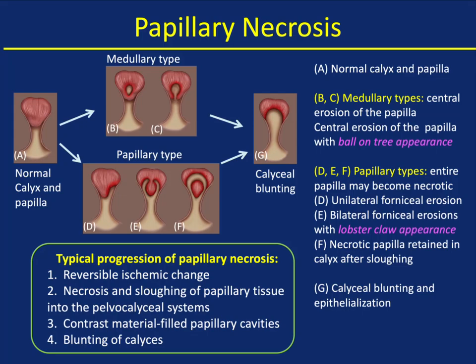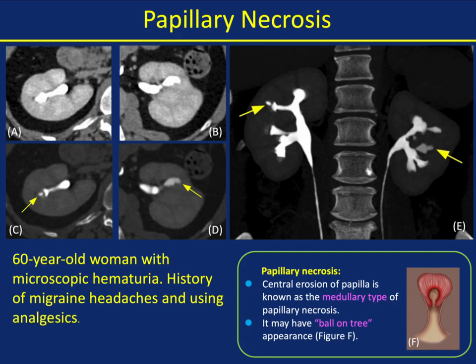There's an excellent article by Satomi Kawamoto I recommend you read, talking about papillary necrosis. You're seeing the normal calyces, then the medullary type of papillary necrosis, the papillary type, and eventually calyceal blunting. The medullary type — central erosion of the papilla with a ball-on-tee appearance. The papillary type: the entire papilla may become necrotic, with bilateral fornyceal erosions giving a lobster claw appearance. Necrotic papillae are retained in the calyx after sloughing, looking like blood clot. The typical progression is reversible ischemic change, necrosis and sloughing into the pelvicalyceal system, contrast-filled papillary cavities, and blunting of the calyces.